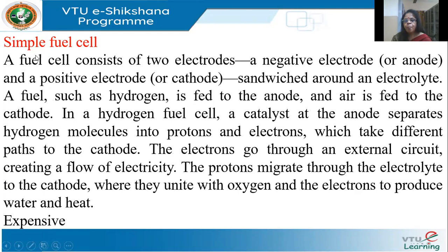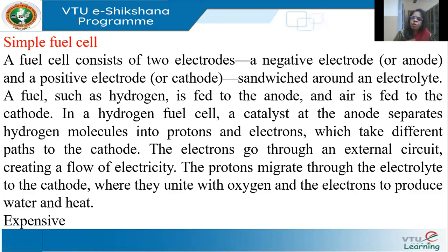A simple fuel cell has two electrodes — a negative anode and a positive cathode — with an electrolyte sandwiched in between, similar to a battery. Hydrogen is fed to the anode and air to the cathode. A catalyst at the anode separates hydrogen molecules into protons and electrons. The electrons go out into the outer circuit as electricity, and the protons migrate to the cathode where they unite with oxygen to produce water and heat.